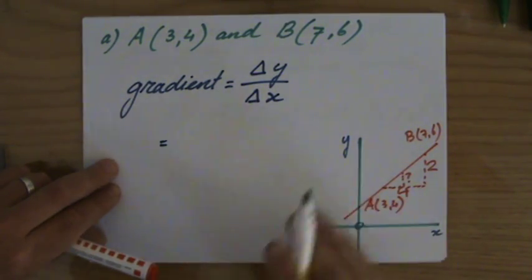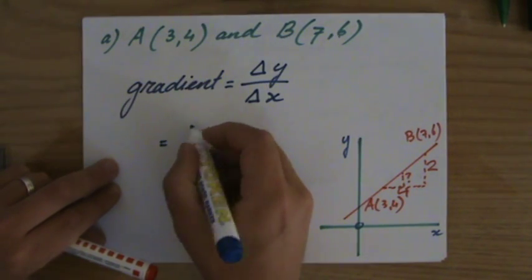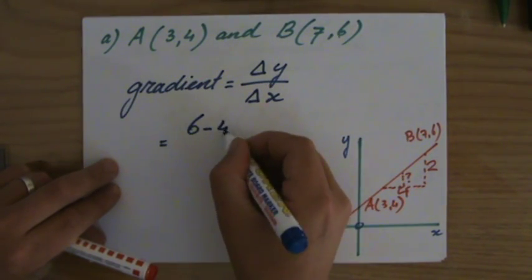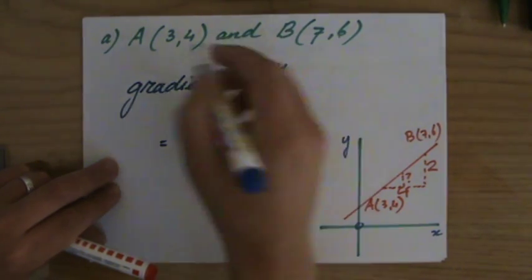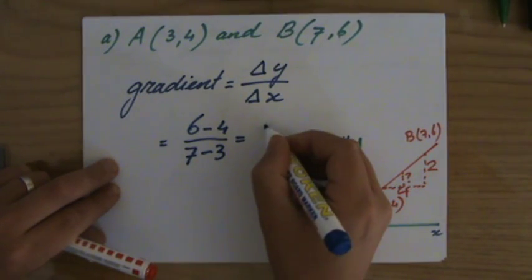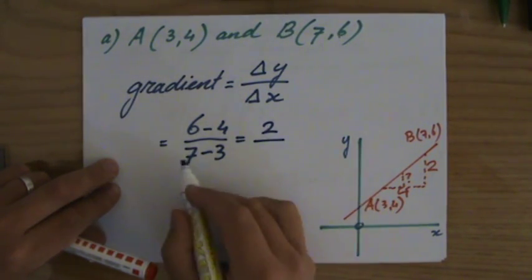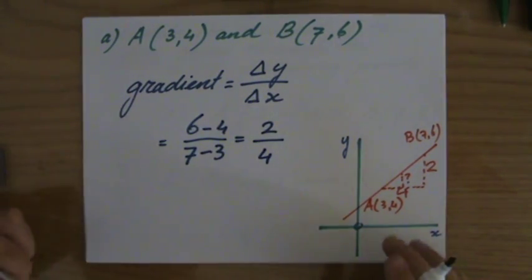So the difference in the y direction—well I know it's two because that is six minus four. Six minus four divided by seven take away three. Six minus four, that is two, divided by seven minus three is four. Two over four is a fraction.